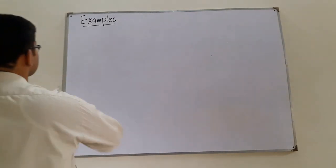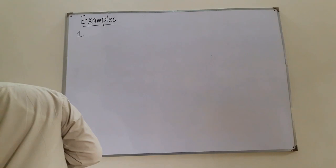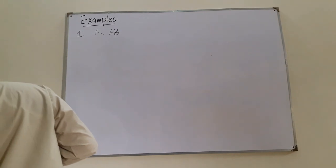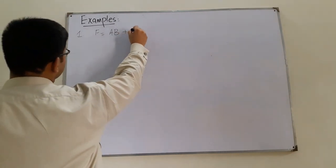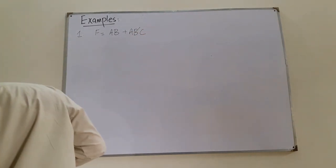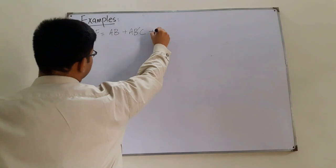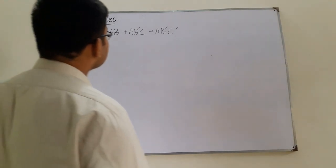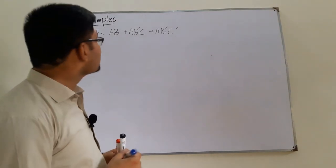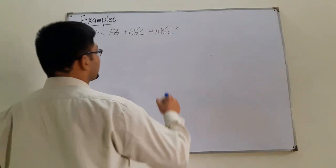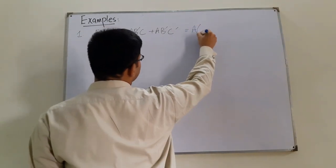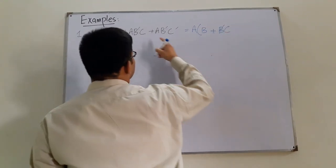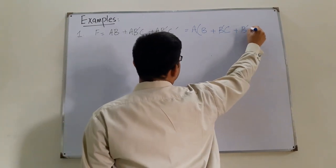The first example of the day: a function is given, f = AB + AB'C + AB'C'. We have to simplify this. First of all, A is common in all three terms, so taking A common: A(B + B'C + B'C').